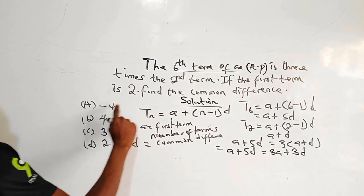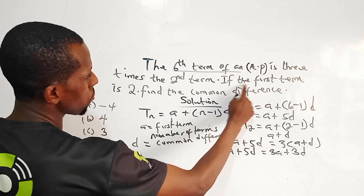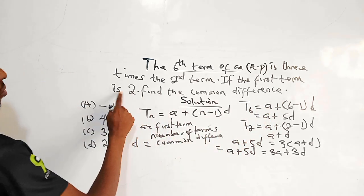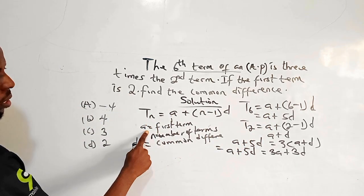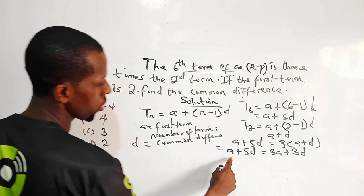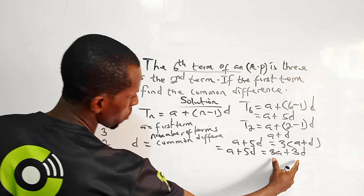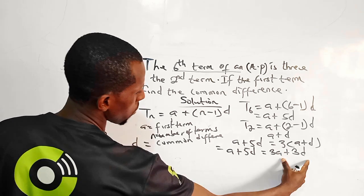So when you look at the question, it says if the first term is 2, our first term represents a. So that means I will change a to 2, which is the first term. So here, which is the sixth term, which equals 3 times the second term, which is this.